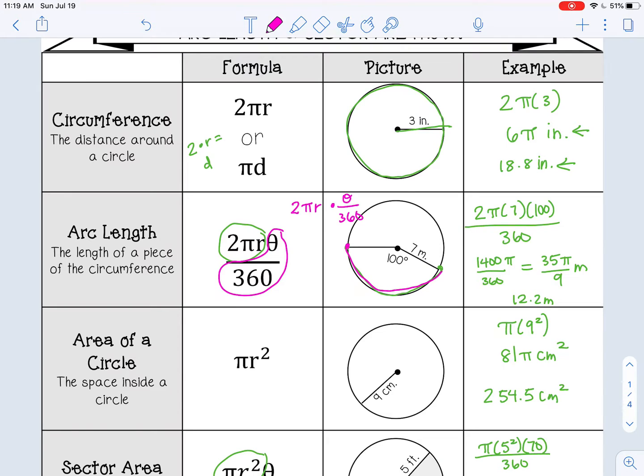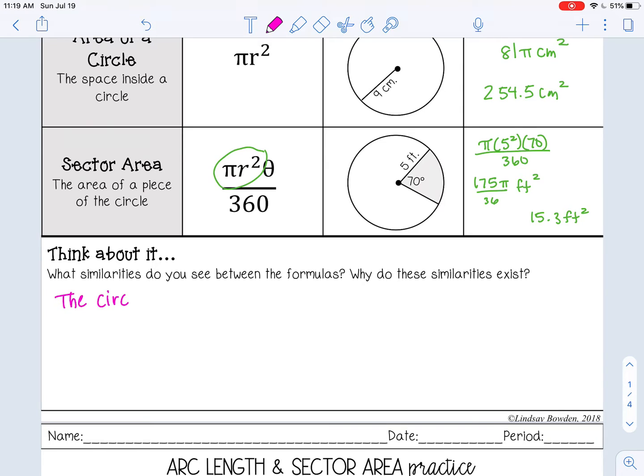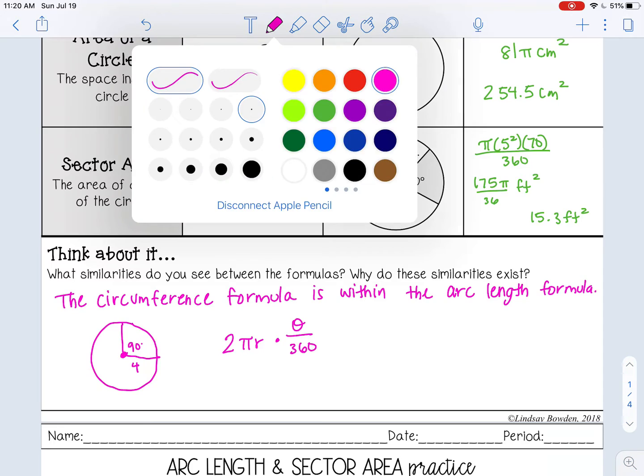Let's talk about why that works. Remember, arc length is just a piece of the whole circumference. So here's the whole circumference. And then this part, the θ over 360 part, tells us the piece that we want, how much of that circumference that we want. So we say the circumference formula is within the arc length formula. That's because arc length is just a piece of the circumference. Let's say that I have a central angle of 90 and my radius is 4. So I'm going to write the formula like this.